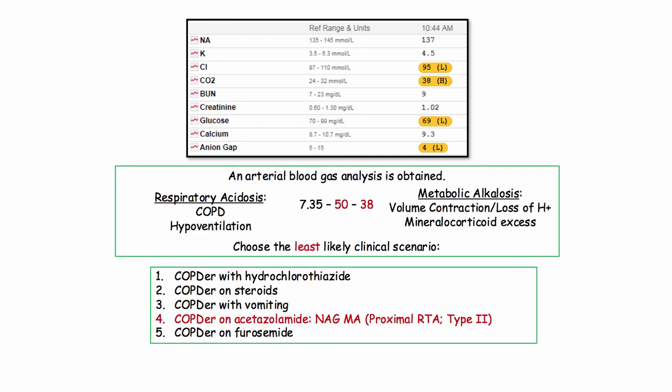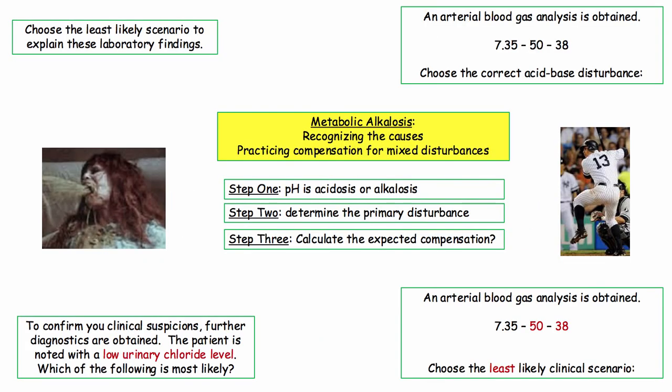All that remains is to plug in the diseases that account for these disorders. And here they are. COPD, or hypoventilation, are the major causes of respiratory acidosis. The choices only offer COPD. So we need to determine the least likely scenario for metabolic alkalosis, and this is similar to the earlier discussion. In this instance, acetazolamide is least likely, as this causes metabolic acidosis through urinary wasting of bicarb. In this question, the patient would be losing bicarb in the urine instead of the stool. The incorrect options cause metabolic alkalosis on the basis of volume contraction, loss of hydrogen ions, or mineralocorticoid excess.